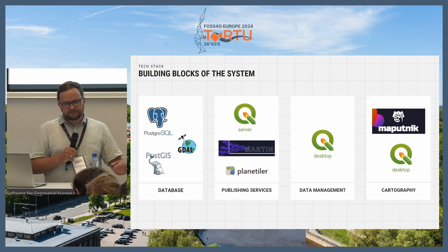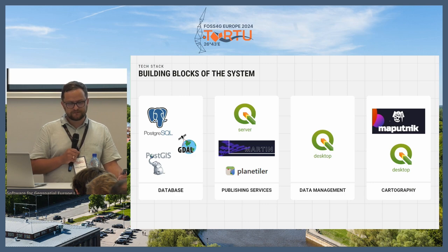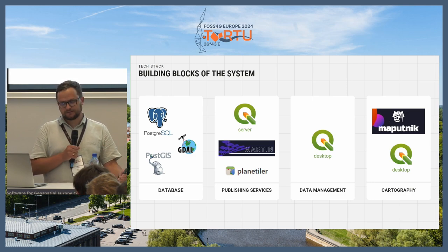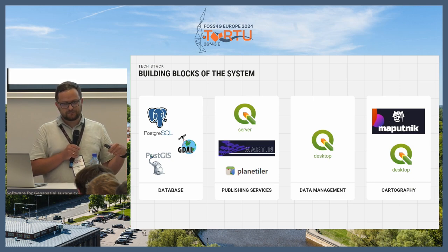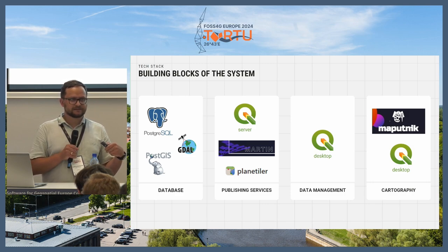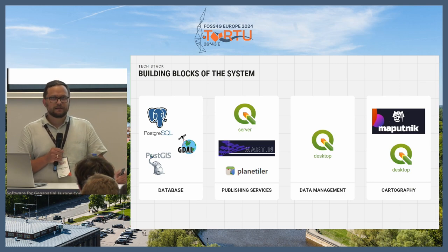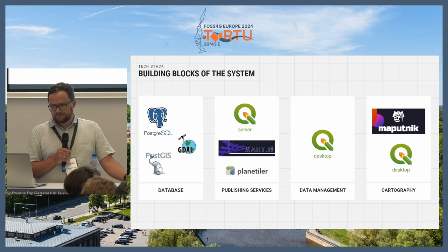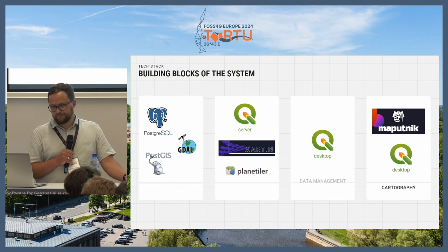We use Martin, which we introduced a little later, for publishing vector tile services directly from a PostgreSQL database. It's usually used for grids, overview layers, statistical grids, and so on. Because we introduced vector tiles as overview layers, we saw that our national base map was not fitting our needs, so we built our own national vector-based base map using national Cadastro data and Planet Tiler. For the desktop part, we use QGIS and Maputnik for cartography, as well as QGIS Desktop.